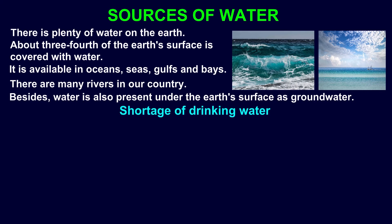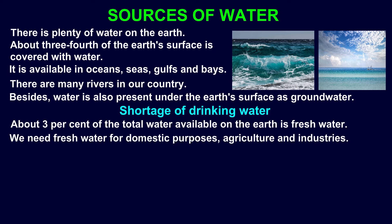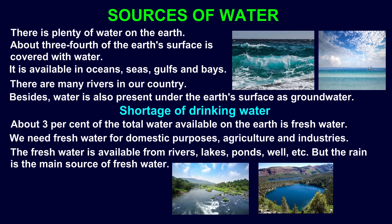Shortage of Drinking Water. About 3% of the total water available on the earth is freshwater. We need freshwater for domestic purposes, agriculture and industry. The freshwater is available from rivers, lakes, ponds, wells etc. But rain is the main source of freshwater.